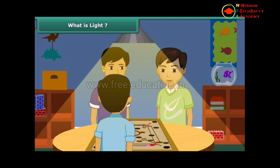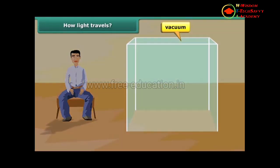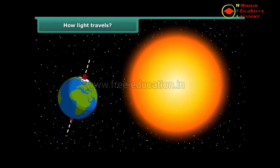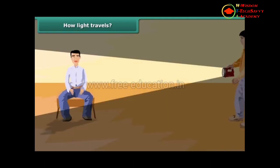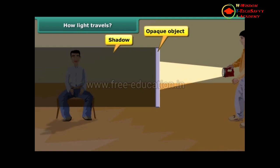Do you know that light is a form of energy, just like sound but still different from it? We know that sound cannot travel in a vacuum; however, light can travel through a vacuum. That is how the light from the Sun reaches our planet Earth. If we keep an opaque object in front of the source of light, the path of light is obstructed, thus forming a shadow behind the opaque object.